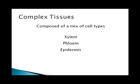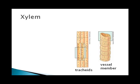Complex tissues are composed of a mix of cell types. Vascular tissues function in the distribution of substances throughout the plant, and dermal tissue systems, called the epidermis, cover all the primary plant parts. Xylem is one of the vascular tissues, and it uses two kinds of cells — both dead at maturity — to conduct water and minerals absorbed from the soil. Vessel members are shorter cells joined end to end to form a vessel with perforation plates at the end of each member. Tracheids are long cells with tapered overlapping ends.